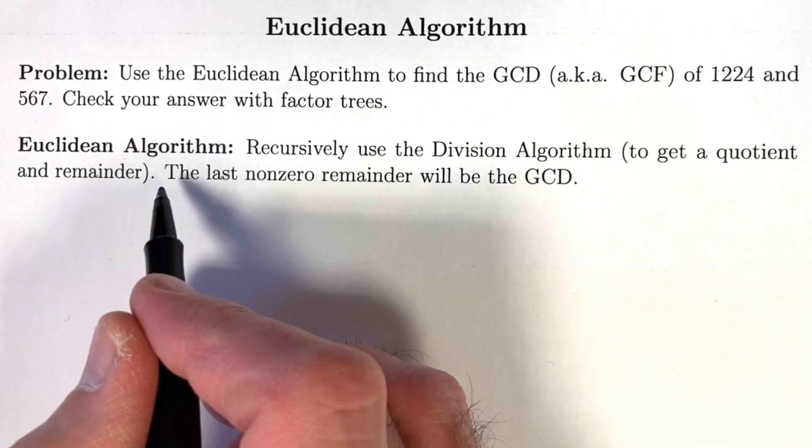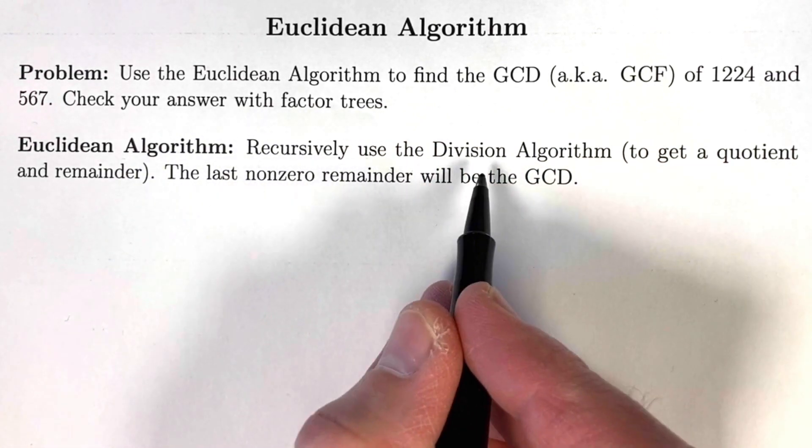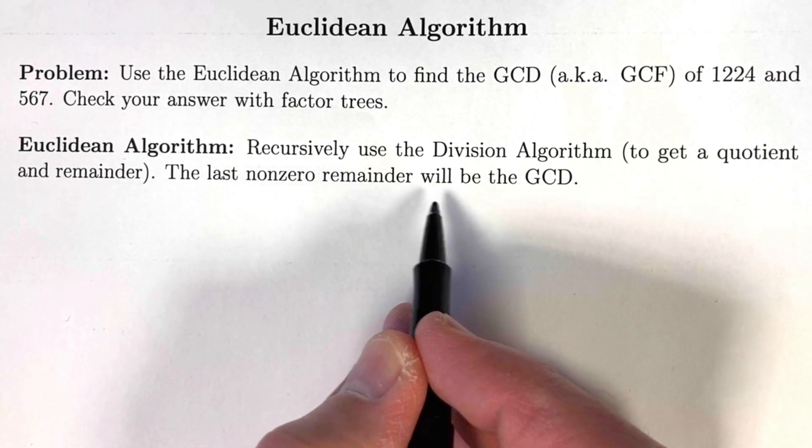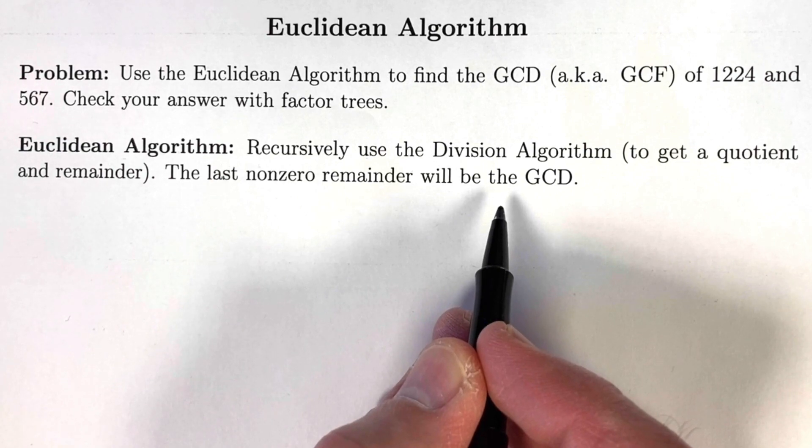What is the Euclidean algorithm? We recursively use the division algorithm where we get a quotient and remainder, and the last non-zero remainder will be the GCD, the greatest common divisor.